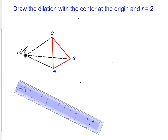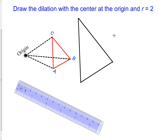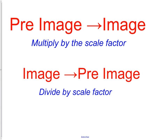We place dots at those new distances and simply connect them to form our new figure: C-prime to B-prime to A-prime back to C-prime. The new object should look identical to the original, just larger. Remember to name your points C-prime, B-prime, and A-prime. The distance from the origin to C is doubled to get C-prime because our scale factor was 2. Going from pre-image to image: multiply by the scale factor.